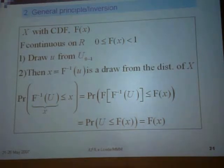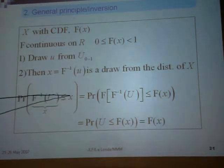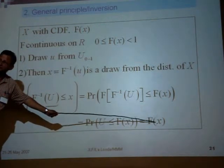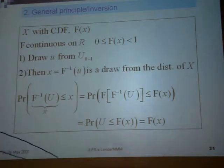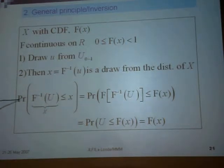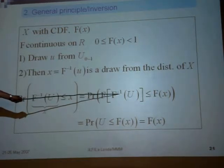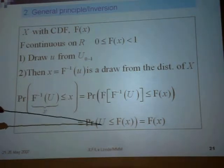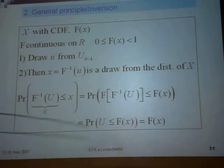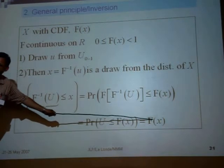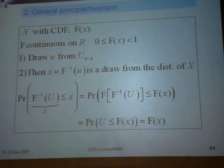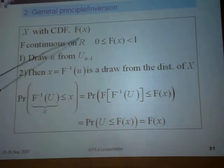Why does this work? It's very simple. We have to demonstrate that the probability of random variable X being less than or equal to little x equals the cumulative density function — by definition this means x has this distribution. Since F is monotonous, this is equivalent to the probability of F of x being less than or equal to F of that value. But F of F inverse is the identity, so it's the probability of u less than or equal to F of x. If u is uniform from 0 to 1, this equals F of x. So provided you have a simple expression for a cumulative density function, you can generate a lot of distributions.